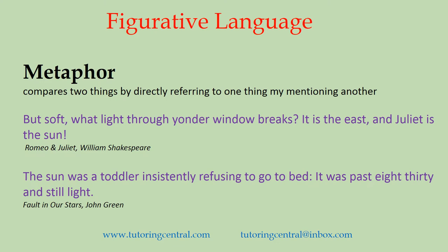Here's another metaphor example by John Green: 'The sun was a toddler insistently refusing to go to bed — it was past 8:30 and still light.' Here we're talking about sunset. The sun is being compared to a toddler who doesn't want to go to bed. Again, the sun and the toddler have very little literally in common, but there's this idea of not wanting to go to bed, and the sun not setting — it's probably summertime when the sun sets very late.